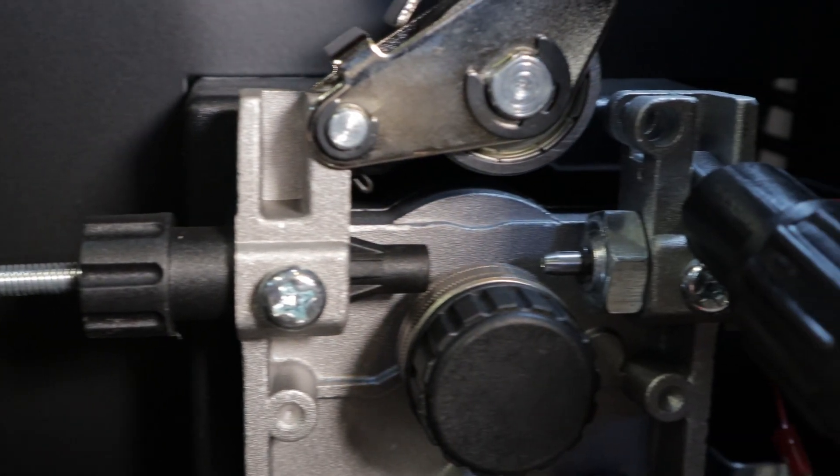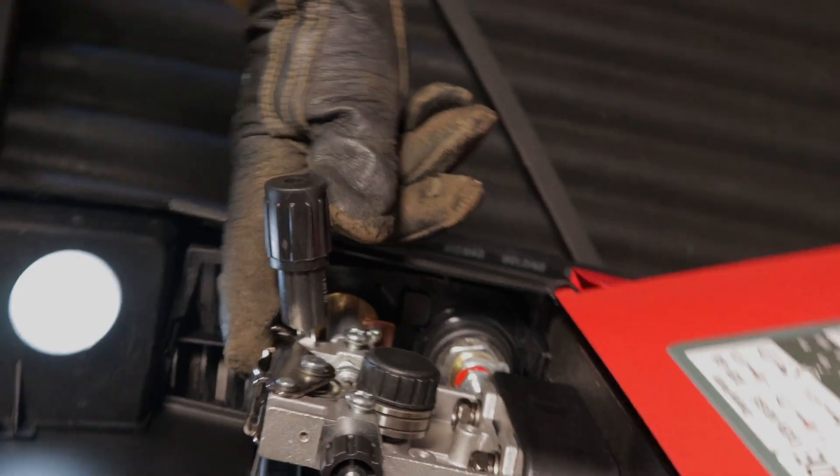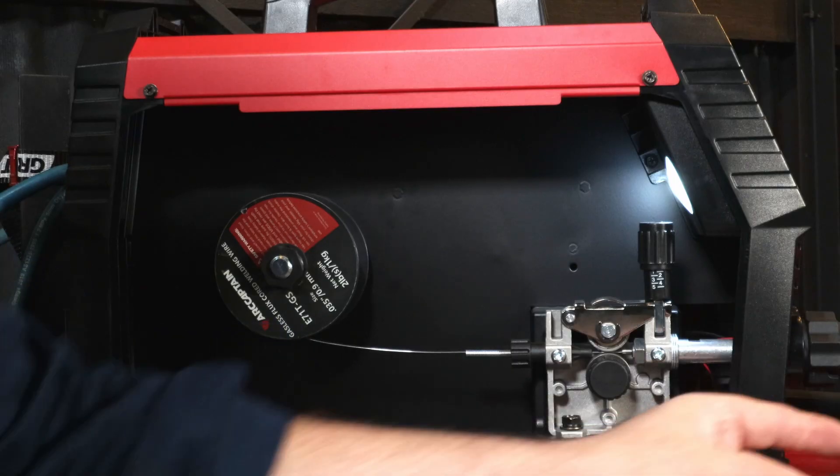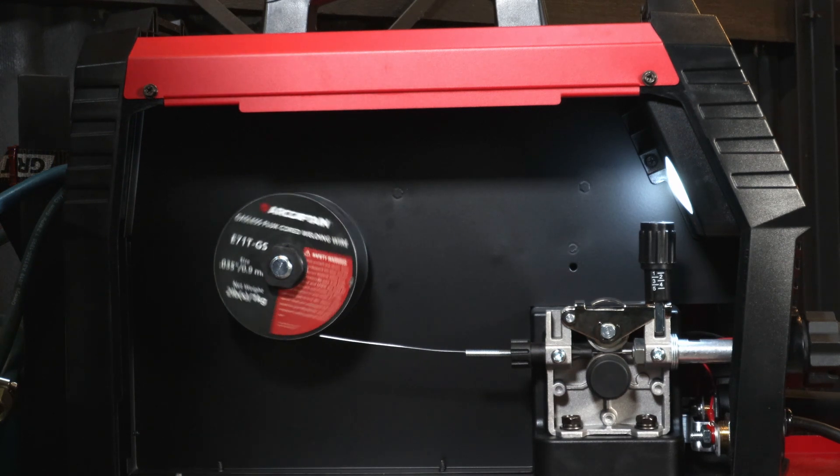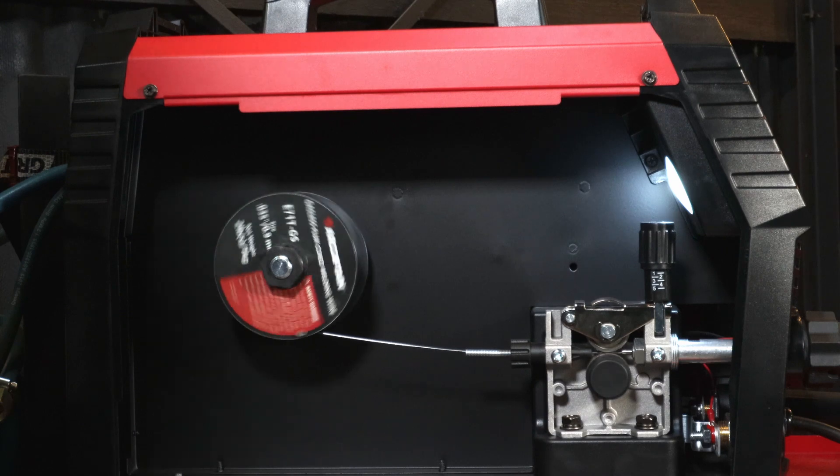Some multi-process welders have an inch button. This feeds the wire when changing the spool. The ArcCaptain will sense what you're doing and will shut off the gas if you are running any and speed up the wire speed.